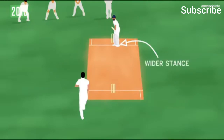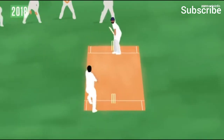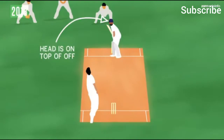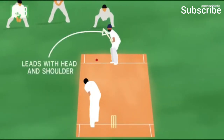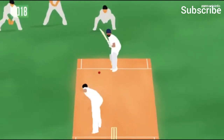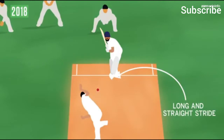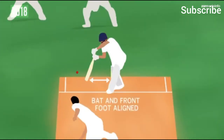In 2018, you see a much wider stance. The head is on top of the off stump. He is leading with his head and his front shoulder. The forward stride is long and straight. Therefore, the bat meets the ball under his eyes beside the front leg.